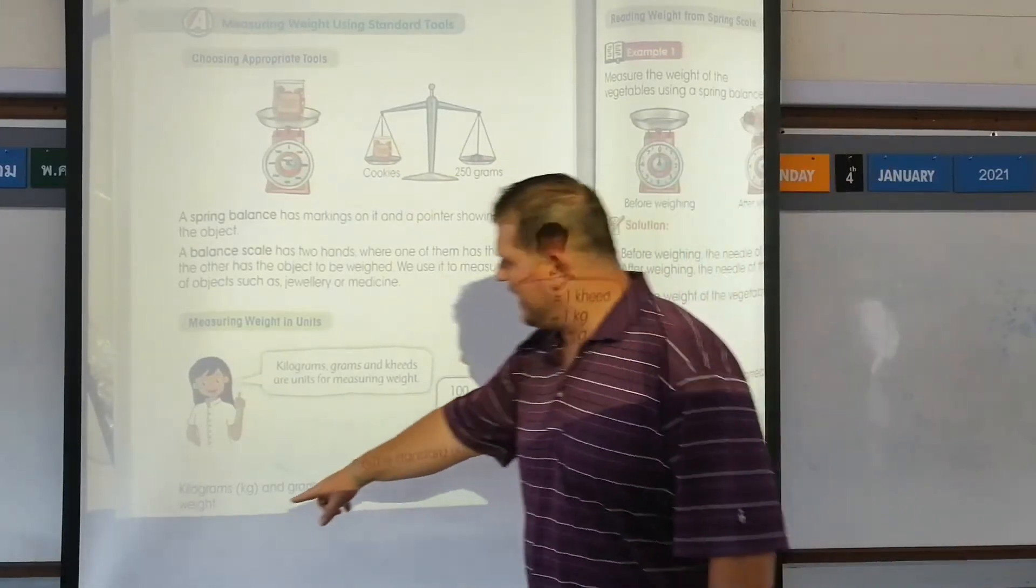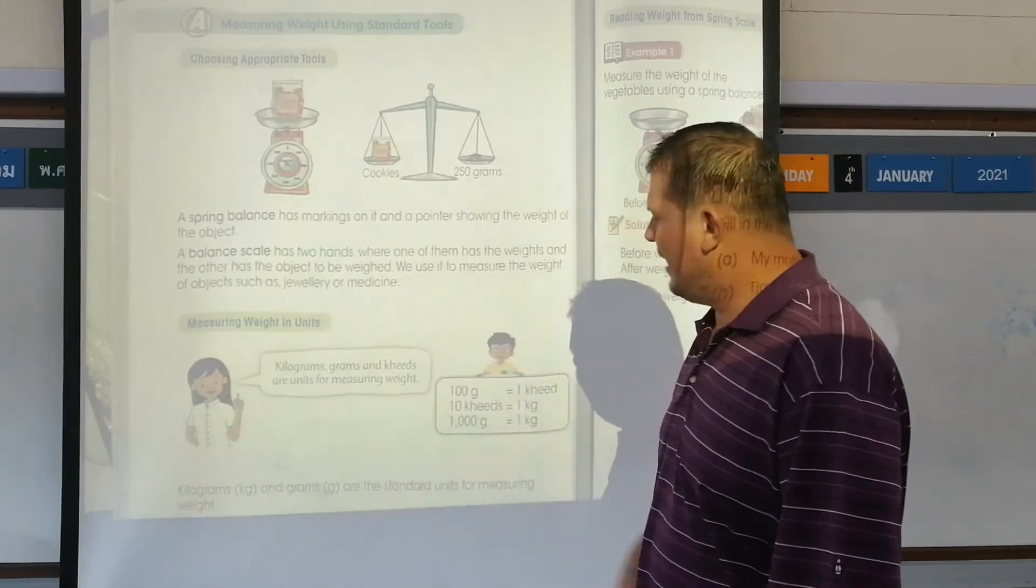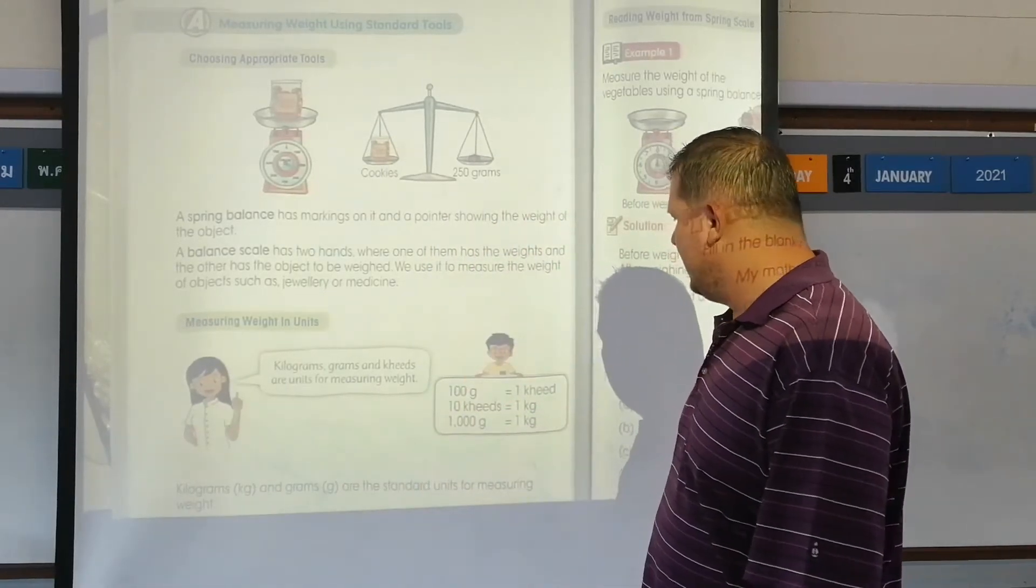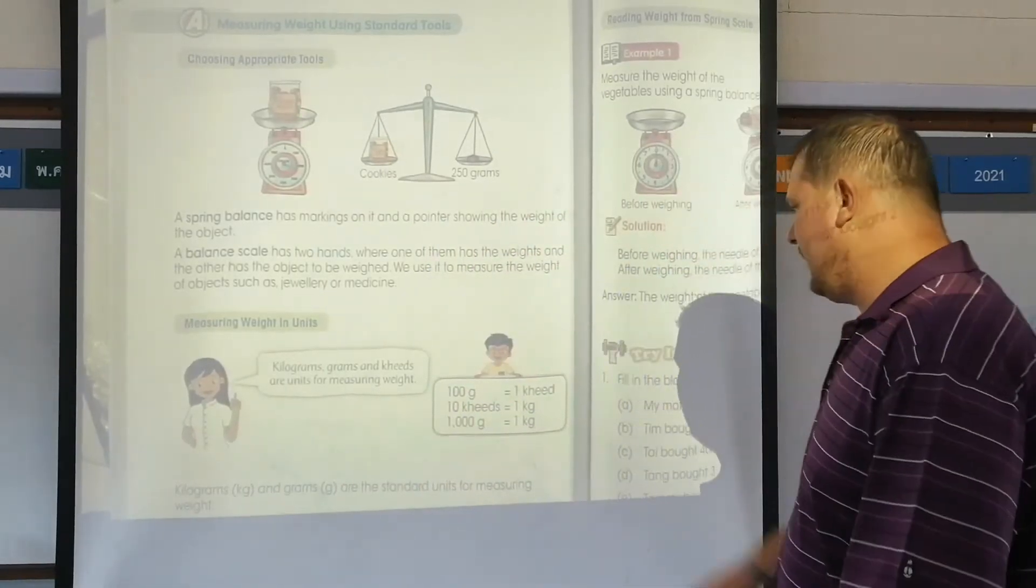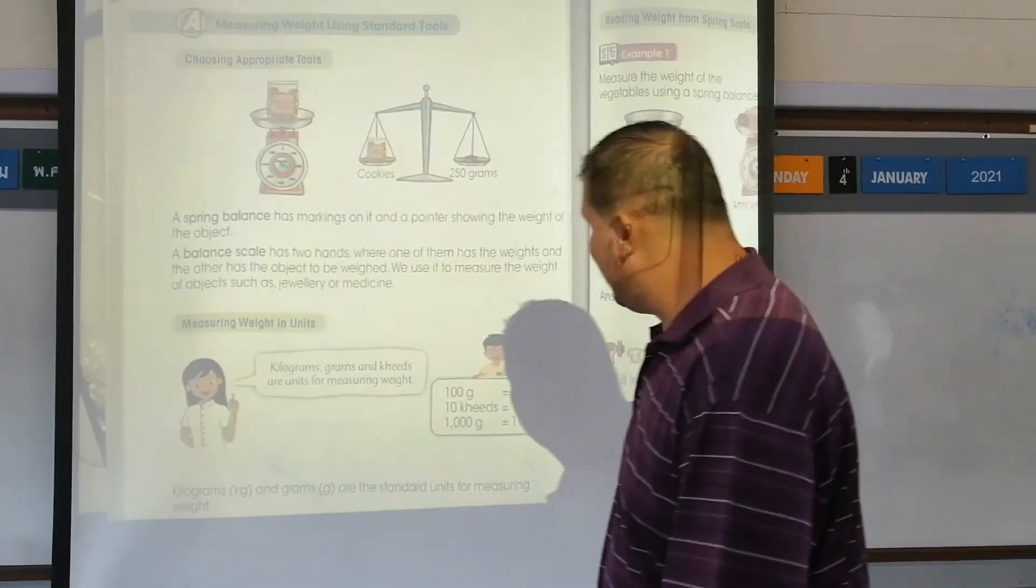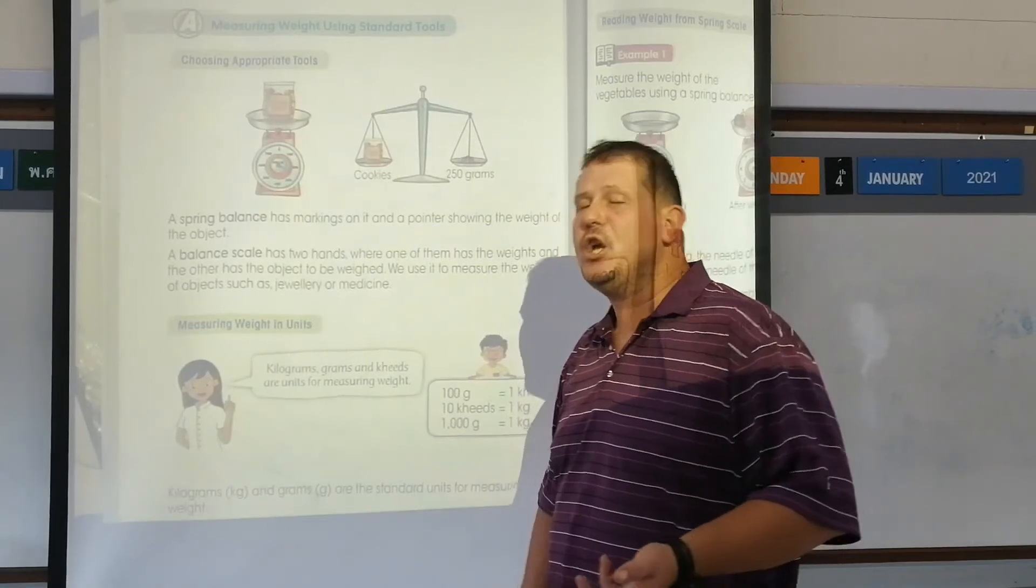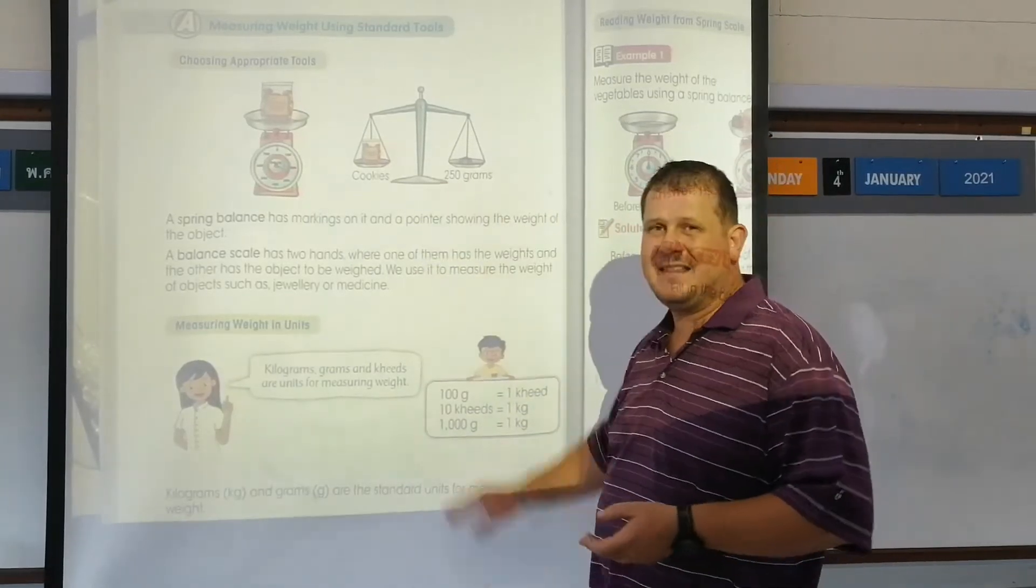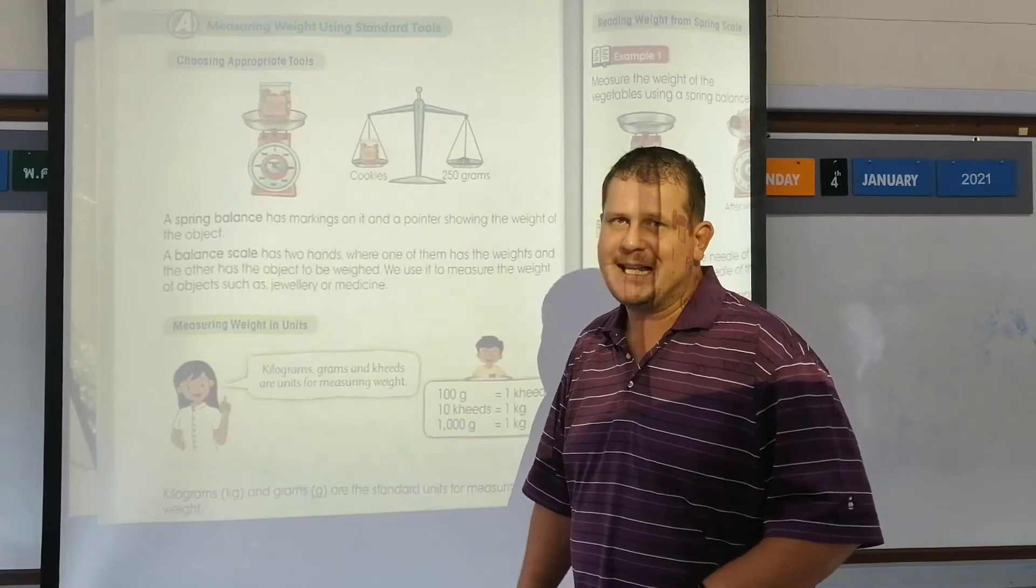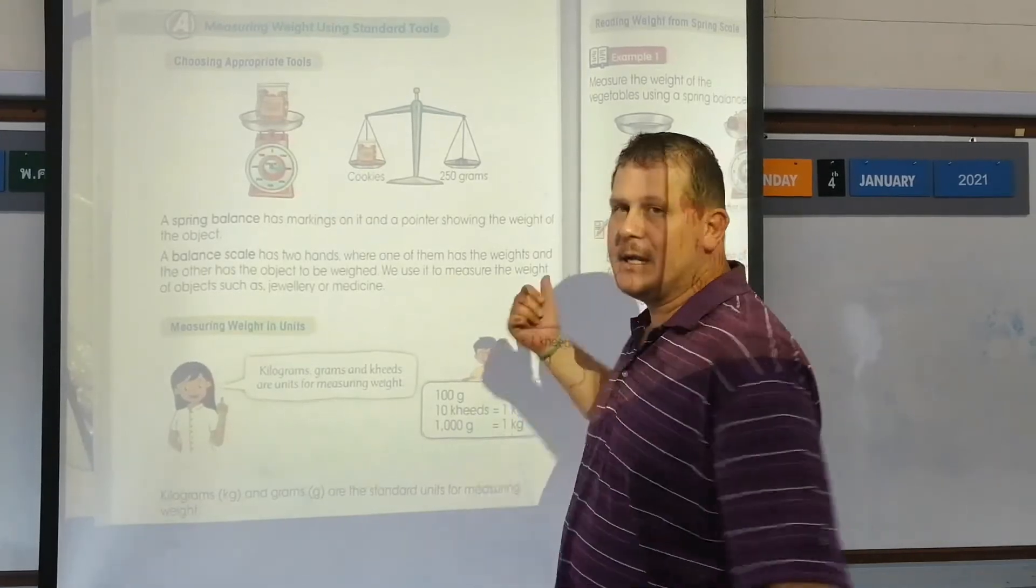Kilograms are abbreviated as KG, grams as G. Kilograms and grams are the standard units, so kids aren't really used, but when it comes to math and solving math, we use kids. Let's look at the next page.